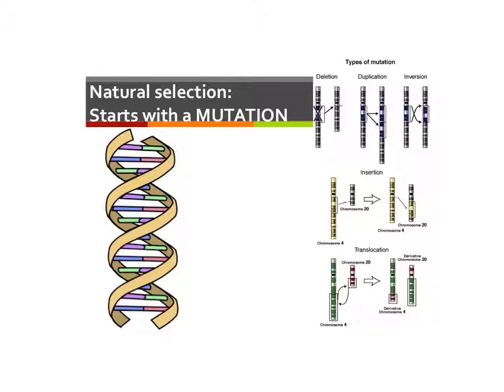Now remember, your traits are all determined by the sequences of A's, T's, G's, and C's in your DNA. So whether it's a new eye color, or a fifth leg, or resistance to an antibiotic, it all starts with a random mutation in the genetic material.